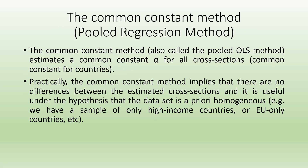In the case of the common constant method, it estimates a common constant alpha for all cross sections — that is, a common constant for all the countries. Practically, the common constant method implies that there are no differences between the estimated cross sections, and it is useful under the hypothesis that the dataset is a priori homogeneous — that is, when we have collected the data, we assume that the entire data is coming from the same homogeneous group.